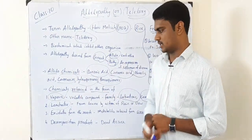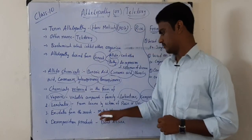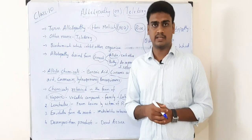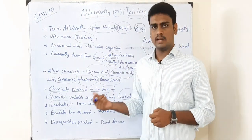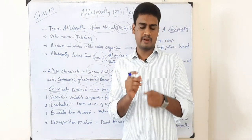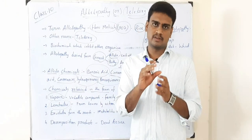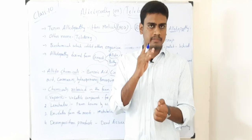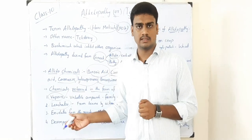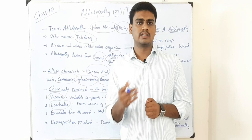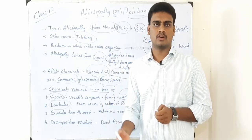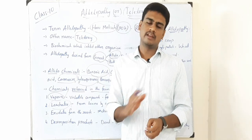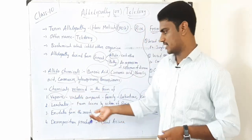The next form is leachers — from leaves by the action of rain or dew. For example, eucalyptus produces small chemical outputs from its leaves. When rain or dew comes and the raindrop hits the leaf surface, these allelochemicals get mixed with the raindrops, fall onto the soil surface, and can suppress the growth of weeds or other plants there.